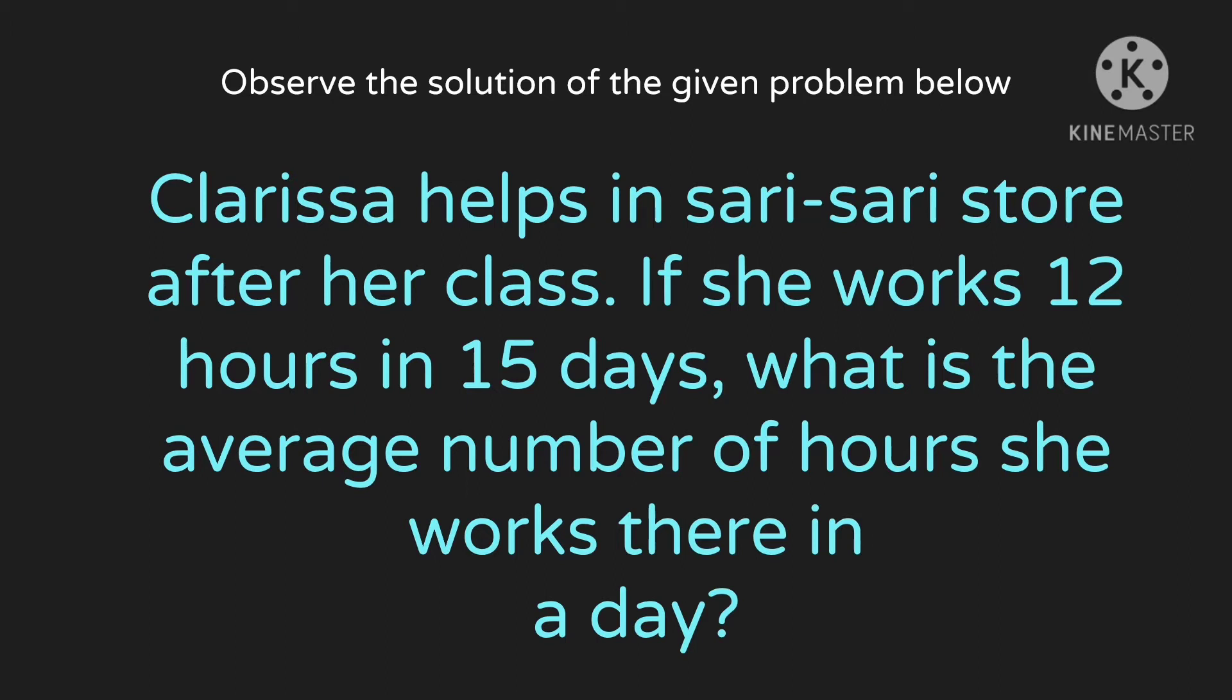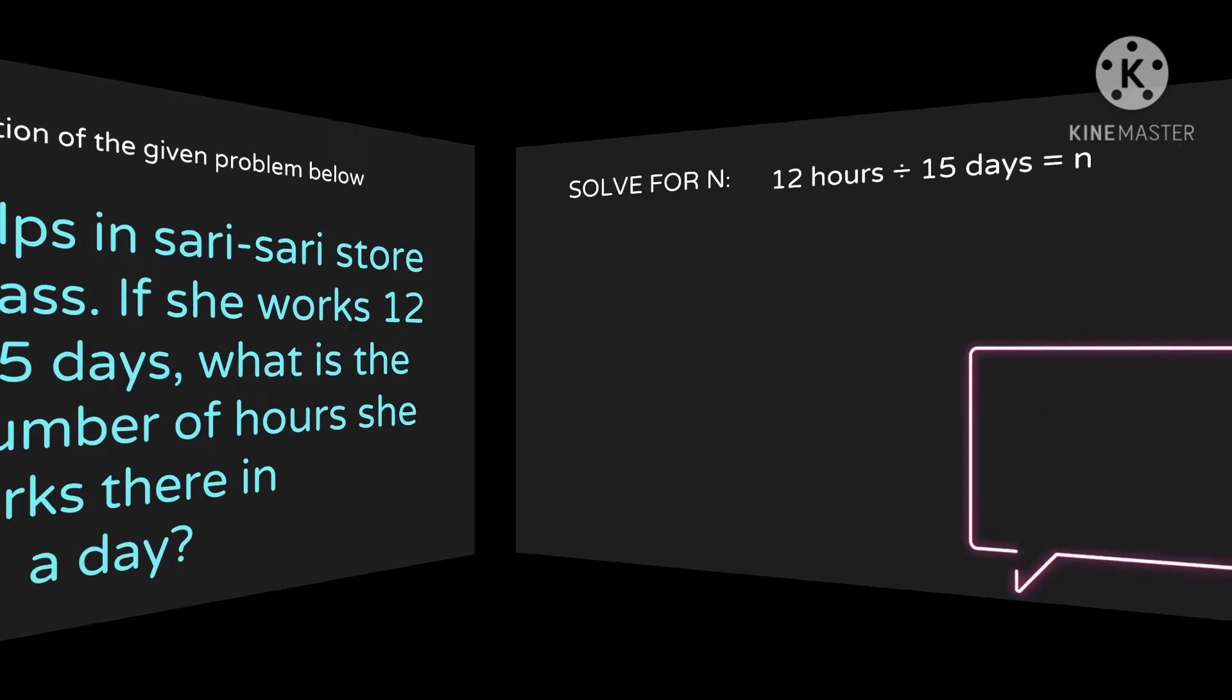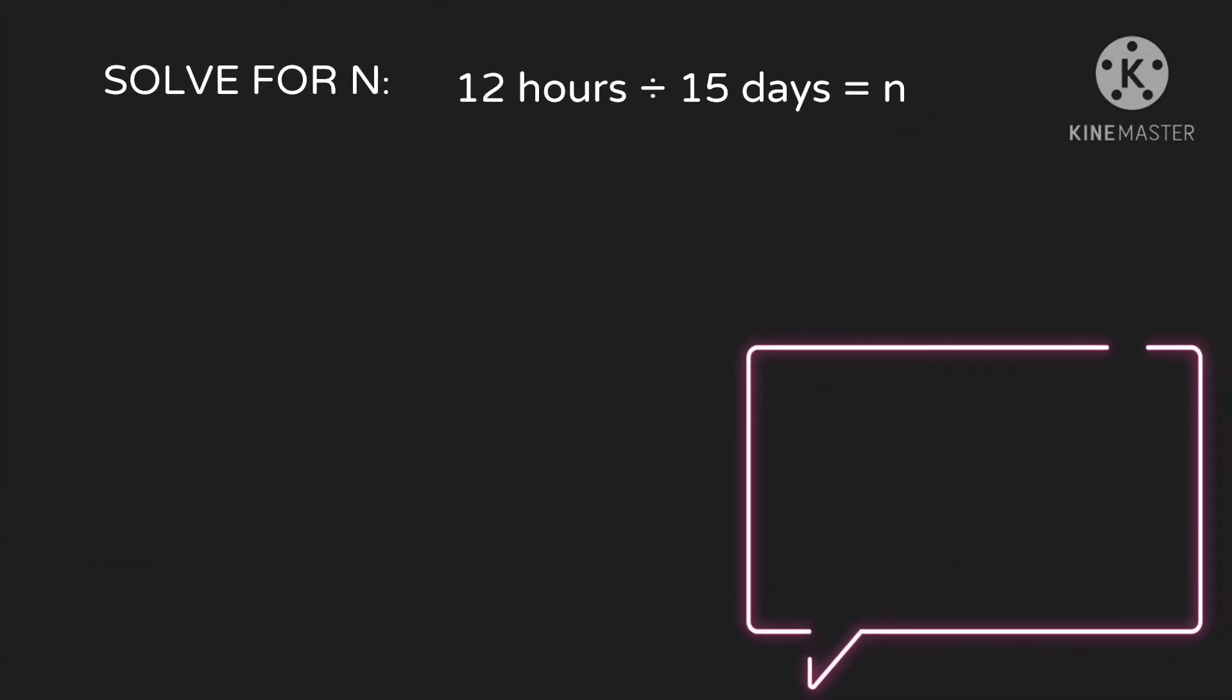So si Clarissa, tumutulong sa sari-sari store nila kapag atapos ng klase. Kung siya ay nagtatrabaho sa loob ng 12 hours in 15 days, so ano ang average number ng hours ng kanyang trabaho sa sari-sari store sa loob ng isang araw? So we will solve this problem using division. We're going to solve for the value of N by dividing 12 hours into 15 days to find the value of N.